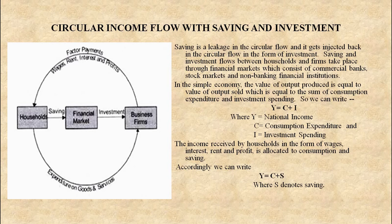In a simple economy, the value of output produced is equal to the value of output sold, which is equal to the sum of consumption expenditure and investment spending. So we can write Y = C + I. Here Y is national income, C is consumption expenditure, and I is investment expenditure. The income received by the households in the form of wages, rent, interest and profit is allocated to consumption and saving. Accordingly, we can write Y = C + S.